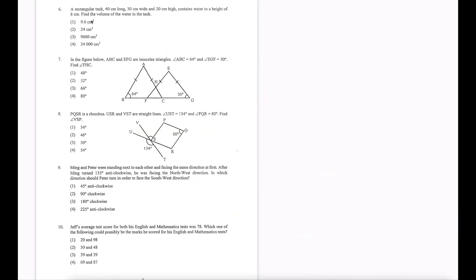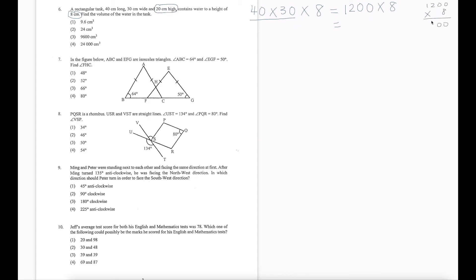Question 6: A rectangular tank 40 cm long, 30 cm wide, and 20 cm high contains water to a height of 8 cm. Find the volume of water. Instead of using the full height of 20 cm, we use 8 cm — the height of the water. Volume = length × breadth × height = 40 × 30 × 8. So 4 times 3 is 12, add two zeros to get 1200, then 1200 times 8 gives 9600 cm³, which is option number 3.